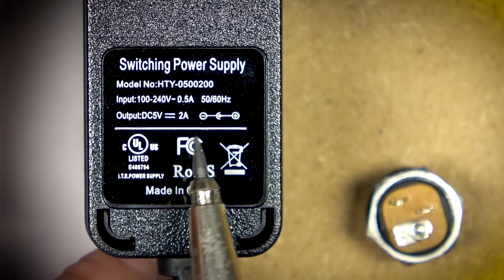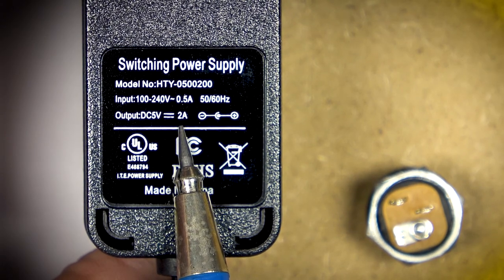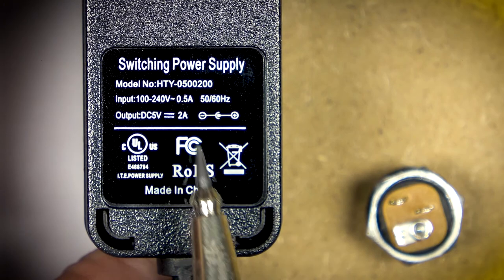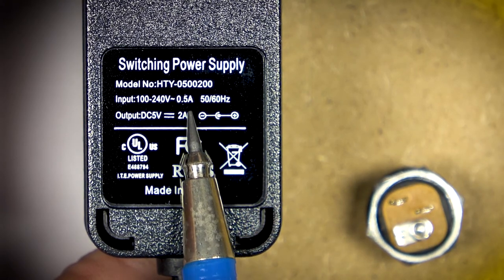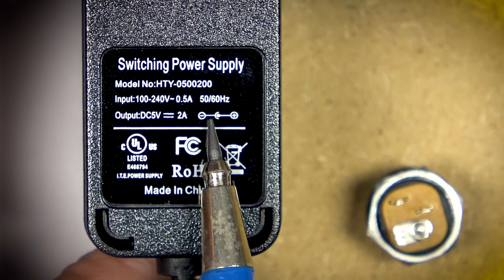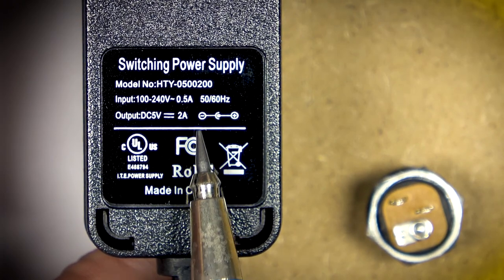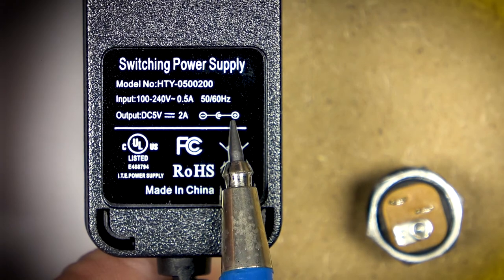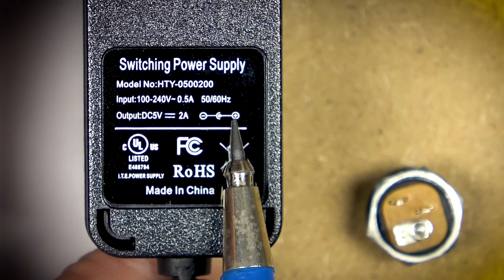The first thing I need to confirm is that this is the right transformer - a 5-volt 2 amp. Then I'm going to look at what the polarity is on the actual plug itself, which is this little diagram. This shows that the outer part of the plug is negative and the inner portion is positive.